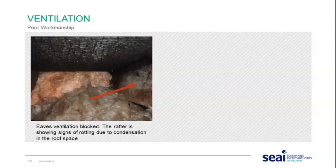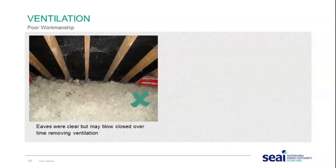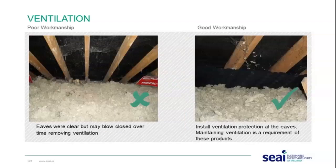Poor ventilation workmanship examples include eaves ventilation that is blocked, with the rafter showing signs of rotting due to condensation in the roof space — it is very important to maintain ventilation at the eaves. Another example shows saturation of insulation transferred through the plasterboard ceiling causing mould growth and health issues for occupants. Eaves that were left clear may blow closed over time, removing ventilation — installing protection at the eaves to maintain ventilation is therefore good practice.